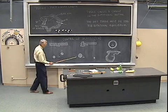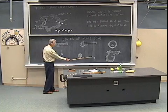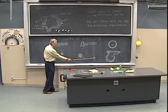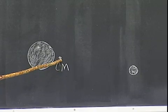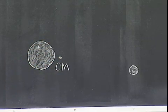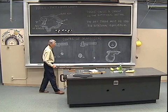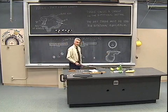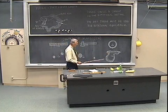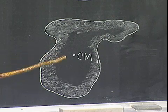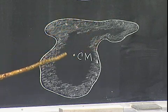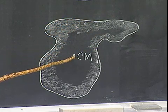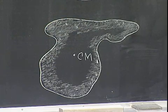However, if one object is more massive than the other, that would tend to pull the center of mass closer to the more massive object. Here's just a general shaped object. Every object has a center of mass, and I'm guessing that this object has a center of mass located somewhere in this vicinity.